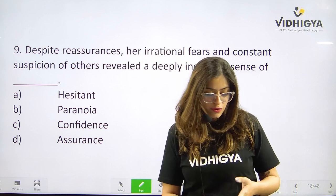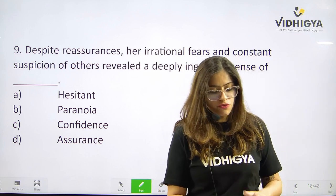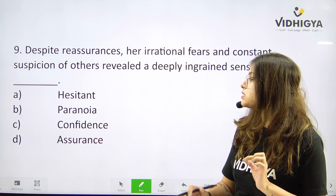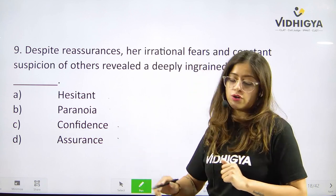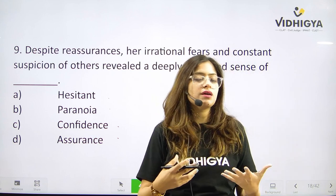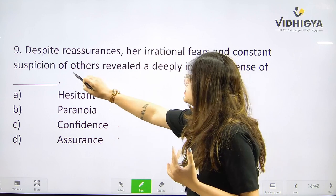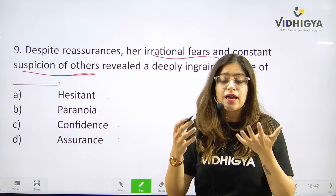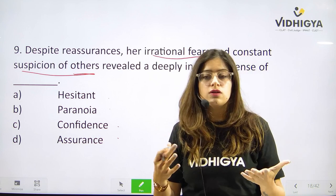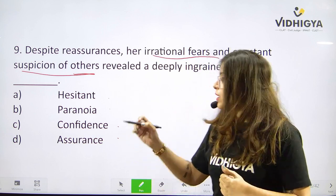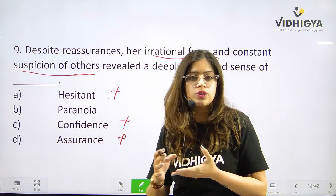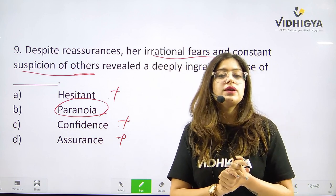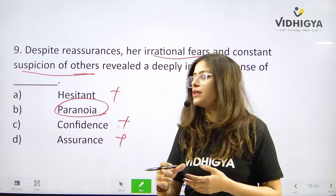Question number nine — just two more to go. Despite reassurances, her irrational fears and constant suspicion of others revealed a deeply ingrained sense of ___. Your options are A. Hesitant, B. Paranoia, C. Confidence, or is it D. Assurance? Despite reassuring someone again and again, they still have irrational fears and suspicion — doubting others constantly — that makes a person paranoid. Hesitant is incorrect; confidence and assurance are positive and also incorrect. Paranoia is a condition — used here for being completely out of one's mind with fear. Answer is B. Paranoia.